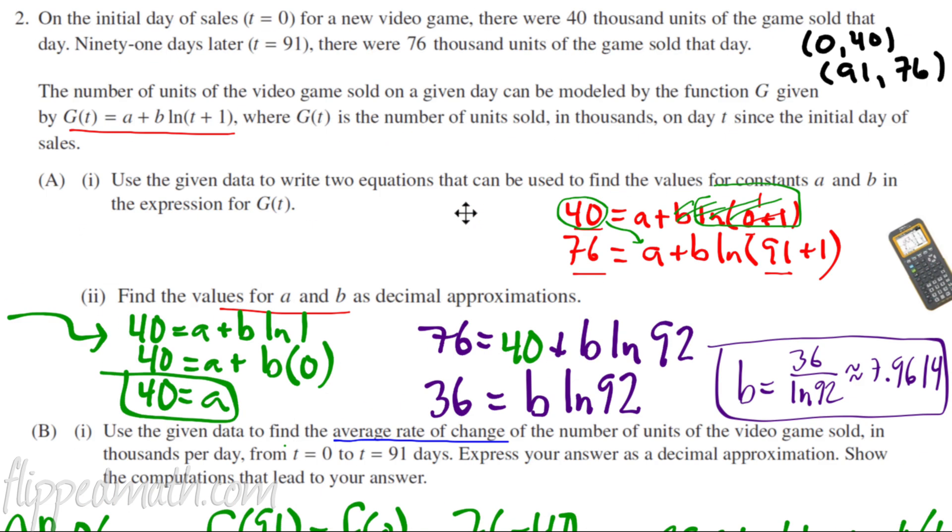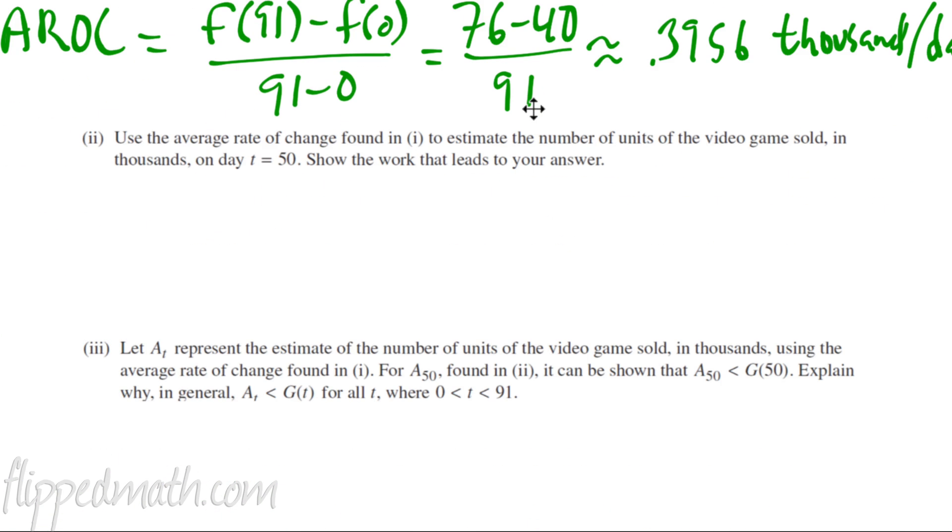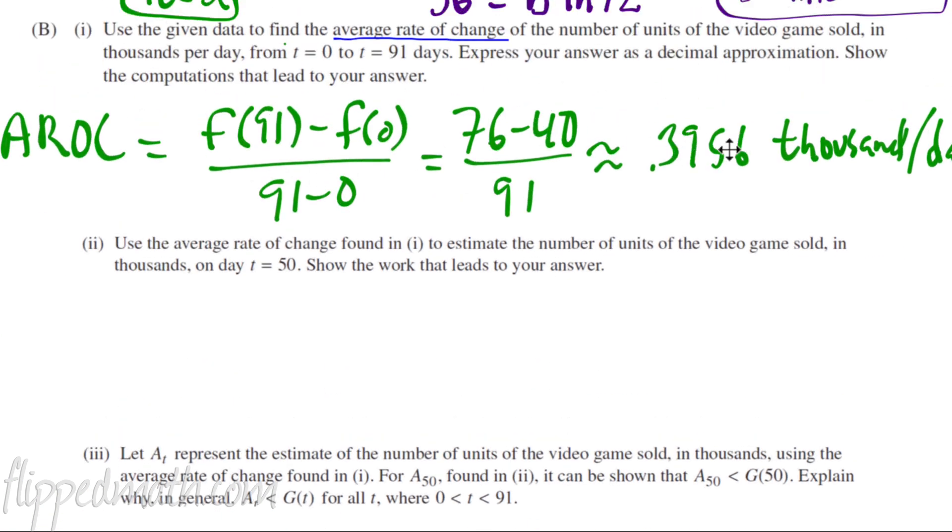Now, suppose way back up here, you wrote the number out 40,000, and you wrote the number 76,000. Well, then this number would be different right here. It would be 395,000, and that's okay according to the scoring rubric. But why would you want to make your life difficult like that? The average rate of change is 0.3956.